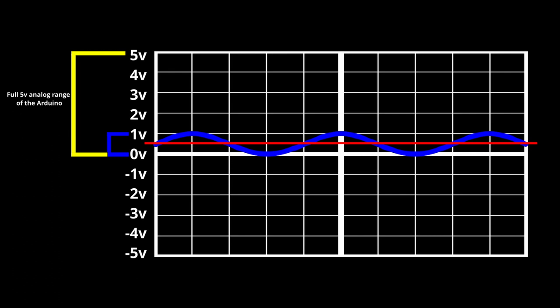Instead of getting a reading that ranged between 0 and 1023, our readings would only vary from the center of our signal by about 102, causing us to lose a lot of detail on the sound that we were reading.